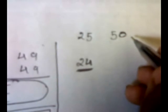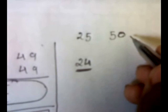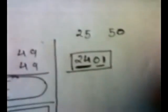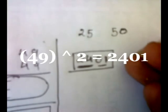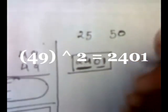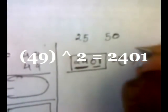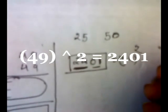Now find out the difference between 49 and 50 — that is 1. Make the square of 1, which is also 1, so we will write it as 01. So here we have the answer: 2,401. And that is exactly the square of 49.